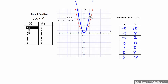We have a vertical stretch by a factor of 2 based on this transformation. We have taken all of the original y coordinates — the x coordinates aren't changing — but we've taken all of the y coordinates and basically grabbed them. For example, we were at point (2, 4) and we grabbed that point and stretched it vertically, making the parabola more narrow or skinny compared to before. Let's look at the next example.